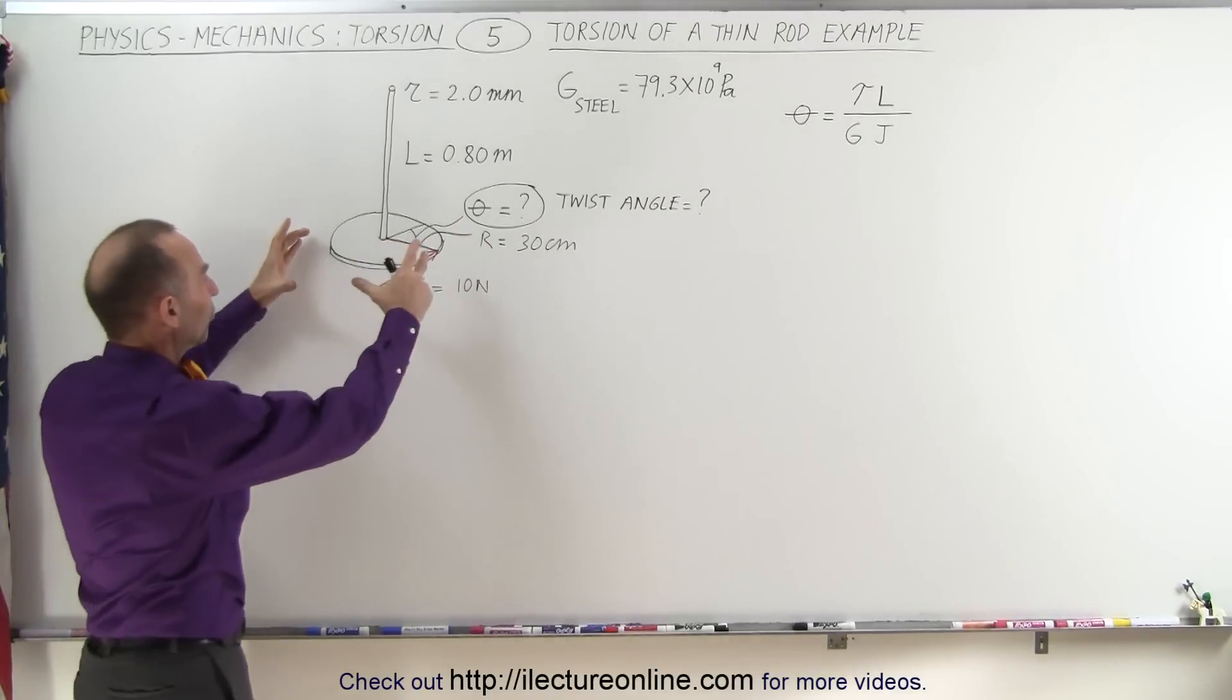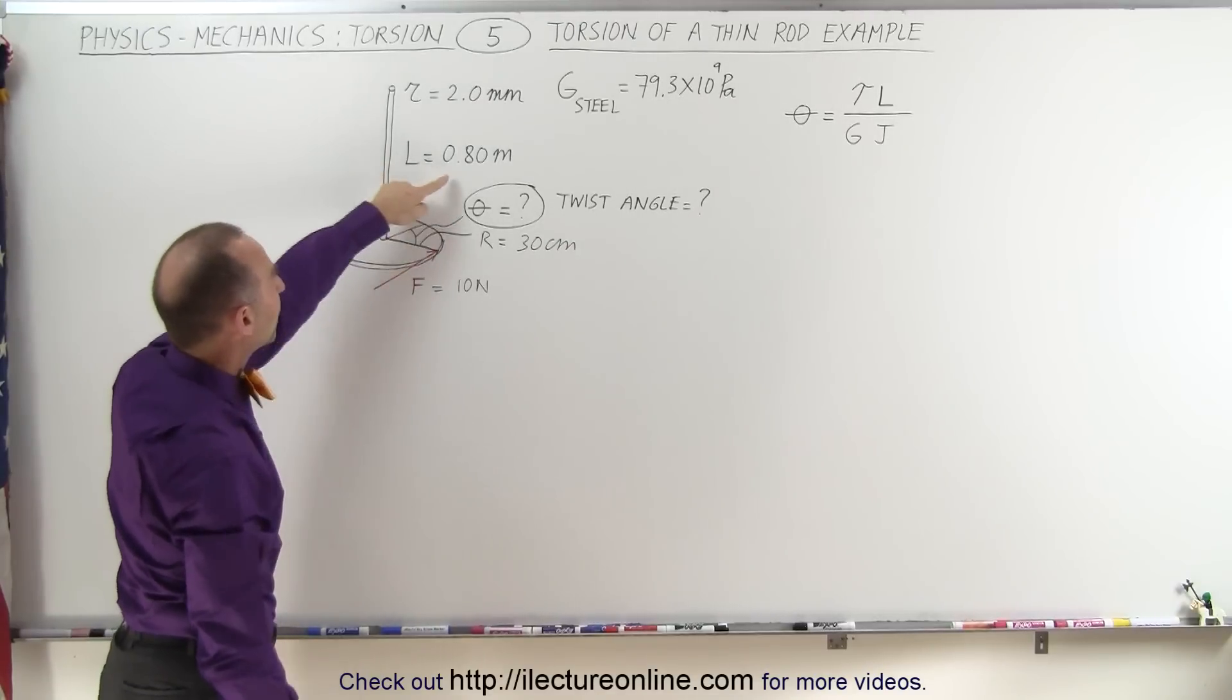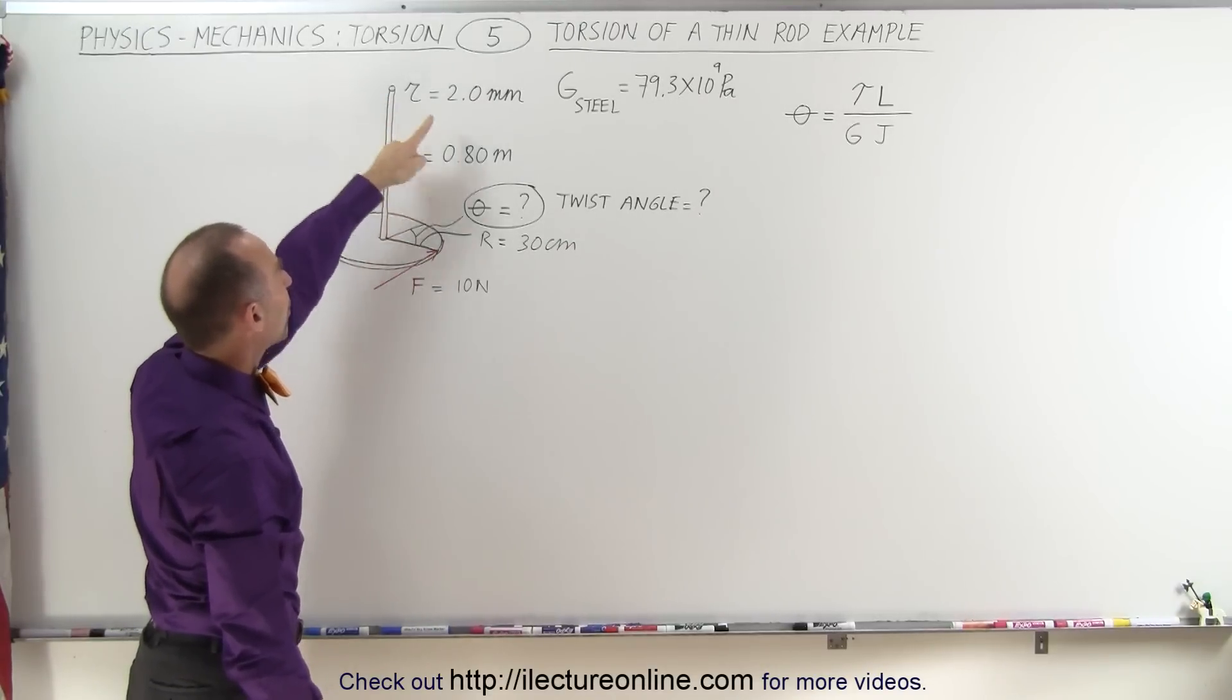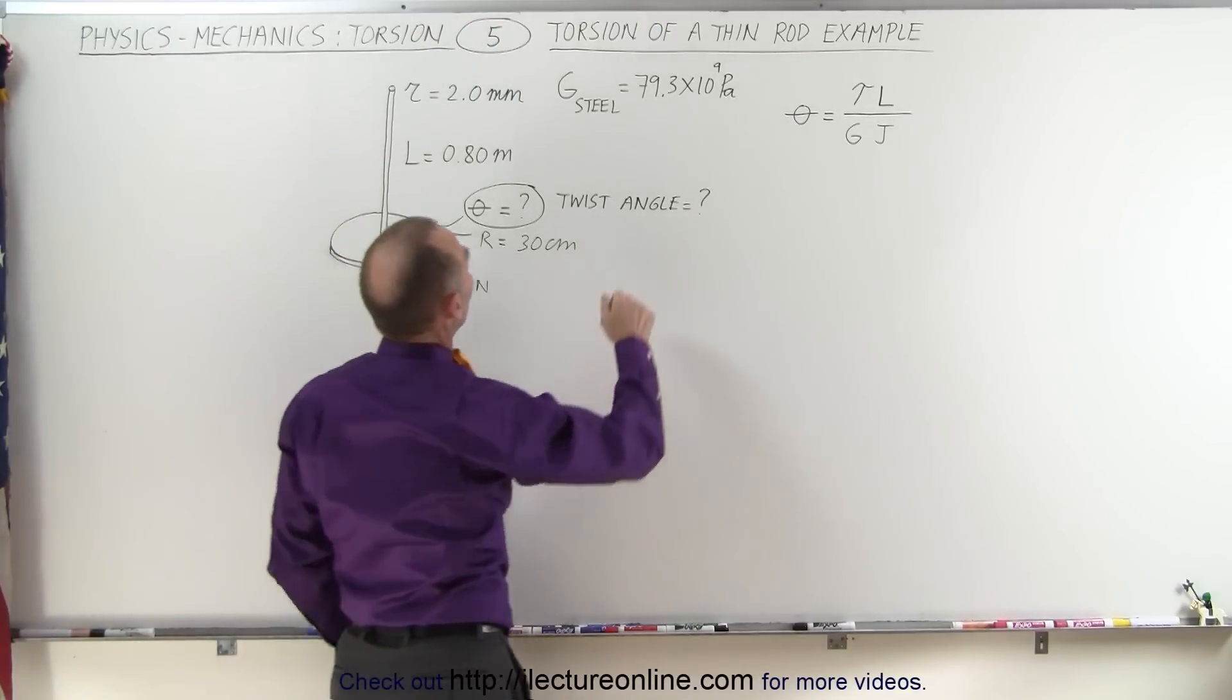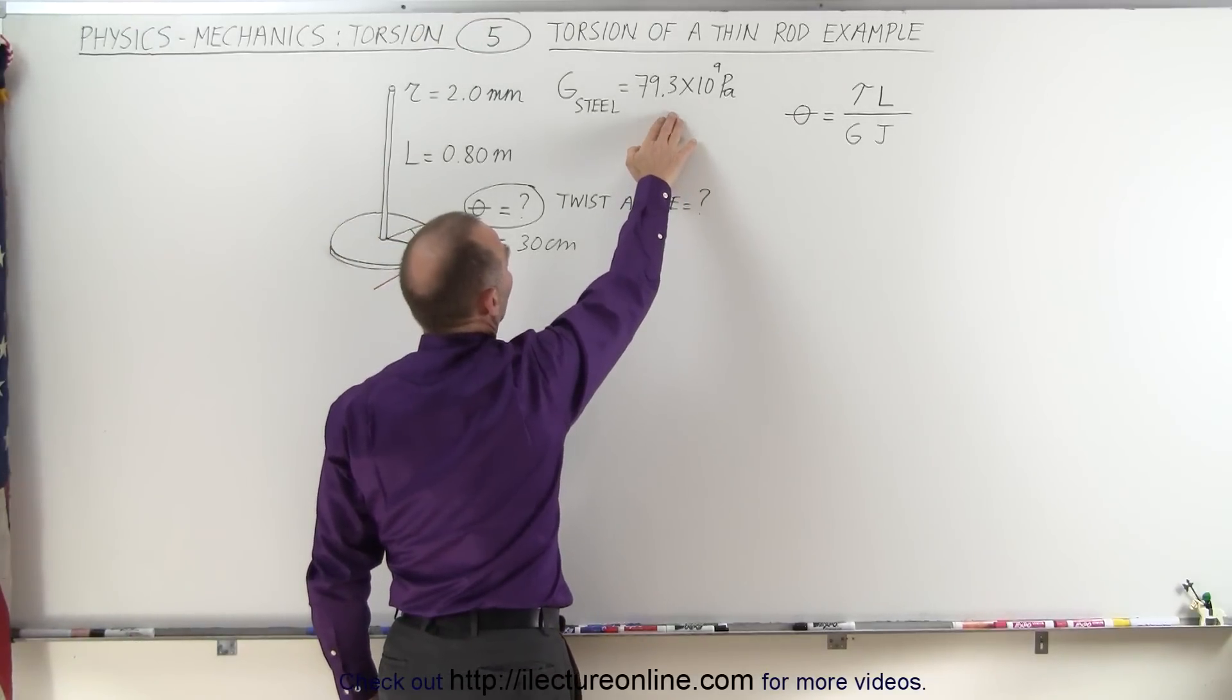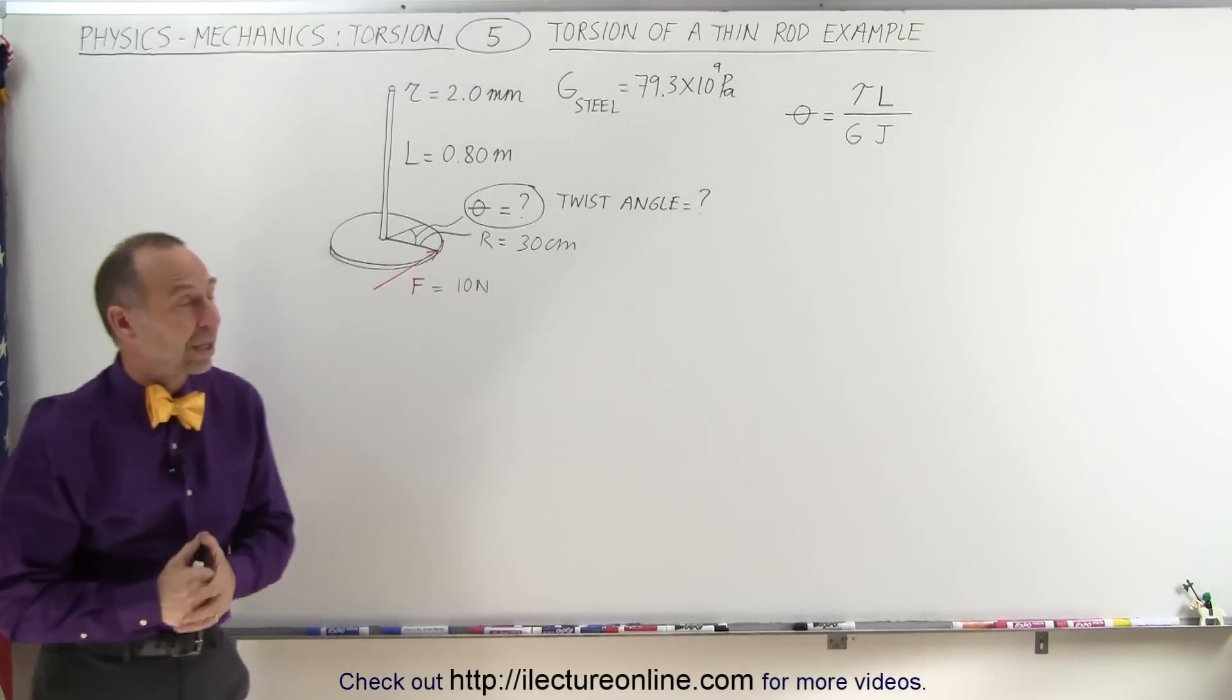So we have a disc suspended from a thin rod. The length of the rod is 0.8 meters and the radius of the thin rod is 2 millimeters. It's made out of steel, so here we have the modulus of rigidity at 79.3 times 10 to the 9 pascals.